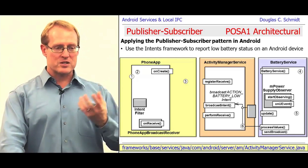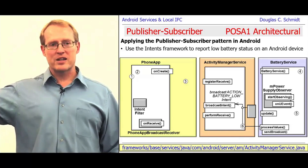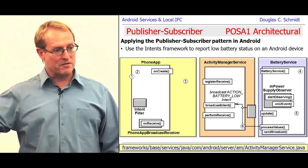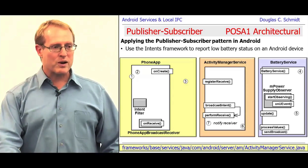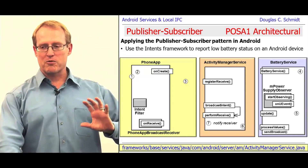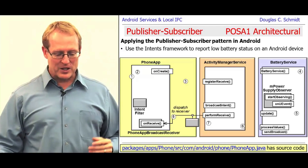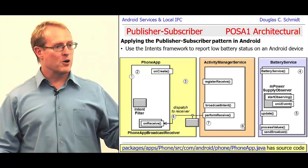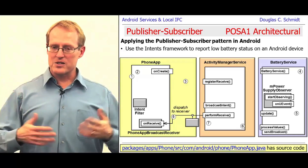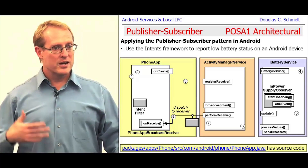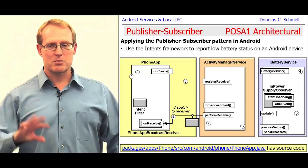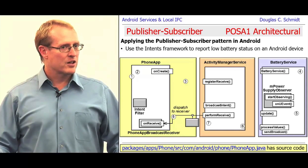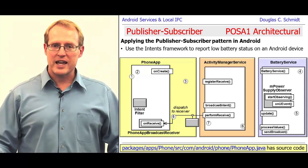The Activity Manager Service says, who cares about this? The phone app cares about this — and some other stuff may care as well. So it turns around and calls a method internally called performReceive, which eventually dispatches the onReceive hook method on the phone app. That goes ahead and does something that informs the phone application that the battery is getting low. It's a bunch of callbacks and very convoluted, but that's basically the path of that portion of Android handling that kind of stuff.